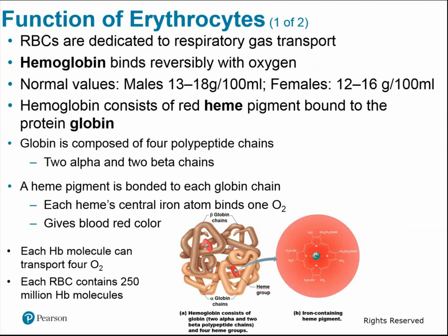Red blood cells are dedicated to respiratory gas transport using hemoglobin, which binds reversibly with oxygen. Hemoglobin consists of the red heme pigment — which gives blood its color — bound to the protein globin, which is actually four protein chains bonded together. Each heme atom binds one oxygen molecule, so one hemoglobin can transport four oxygen atoms. One red blood cell contains about 250 million hemoglobin molecules, meaning it can transport up to a billion atoms of oxygen.